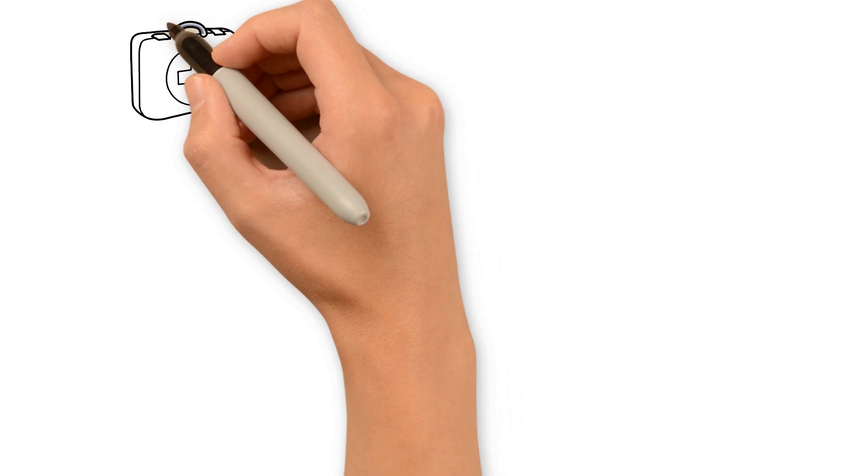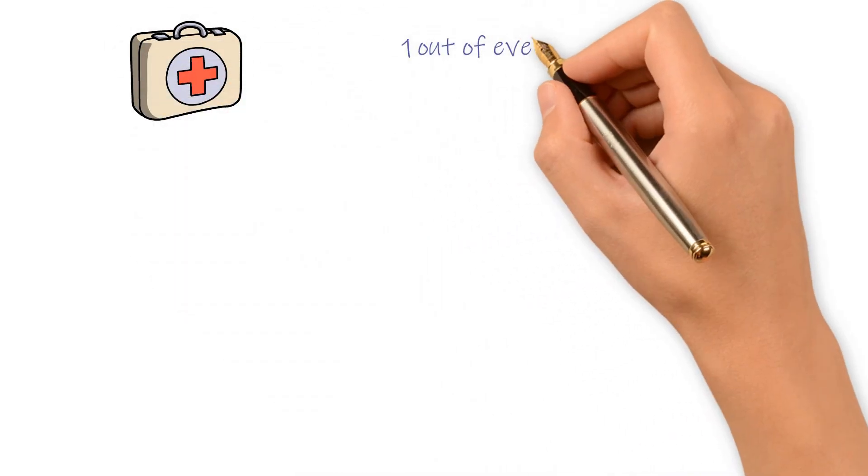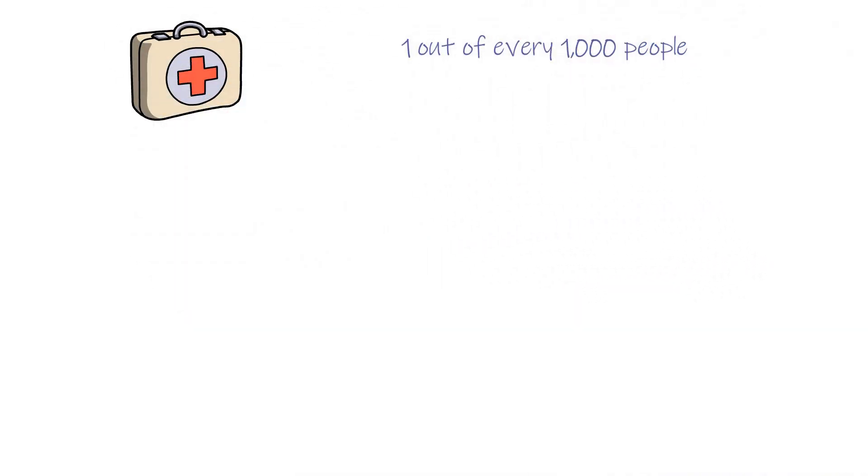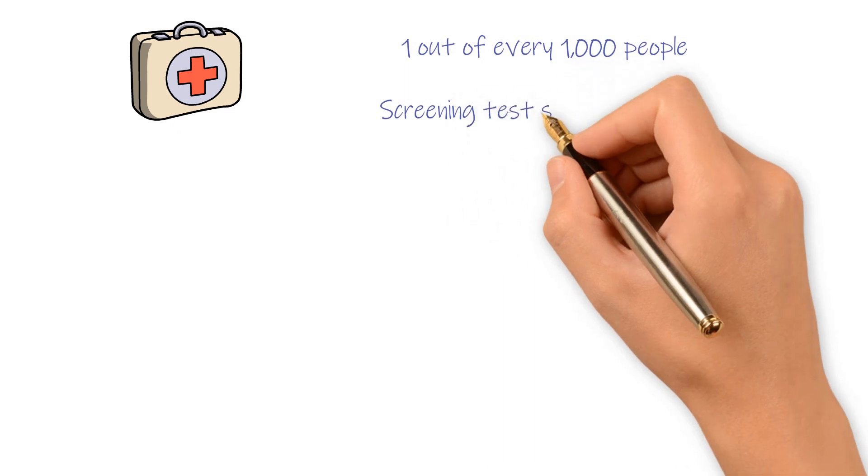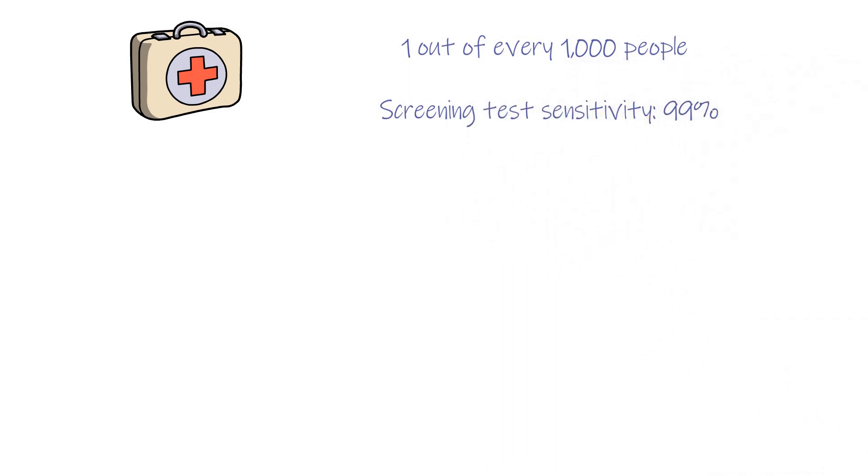If there is a disease that affects one of 1000 people, and the screening test has a reported sensitivity of 99%, then someone gets a positive test result. What is the chance he really has this disease? 99%?